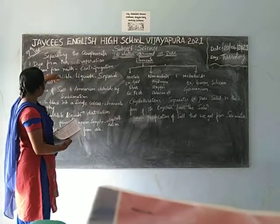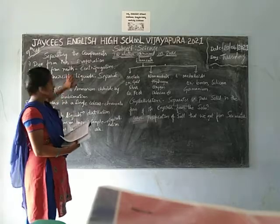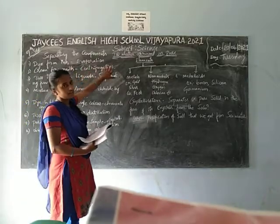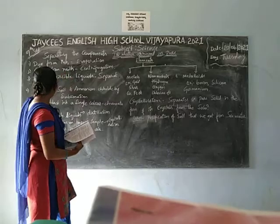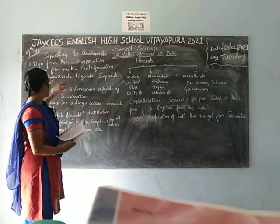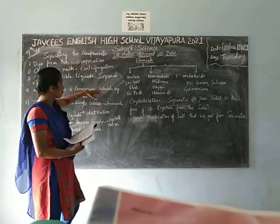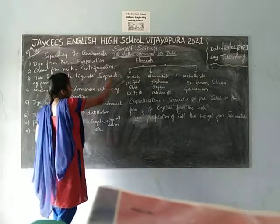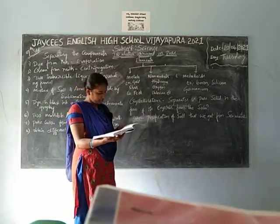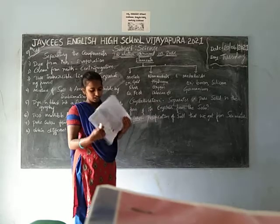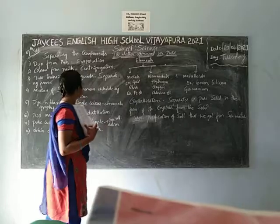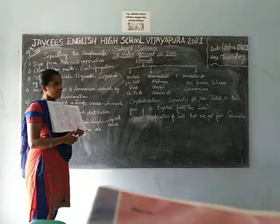Next, separation of dye: the dye can be separated from ink by the process of evaporation — this is also done in class. Next, separation of cream from milk: milk and cream are separated by the process of centrifugation — this is also done in the last class. And separation of two immiscible liquids takes place by the process of a separating funnel, as seen in the textbook.